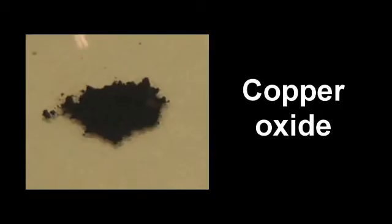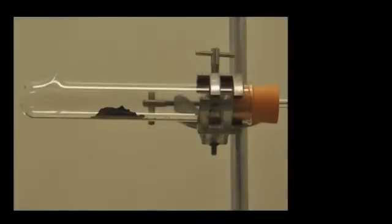Copper oxide is a black powdery solid. We place a small amount of copper oxide in a boiling tube which has a hole in the bottom. Methane is passed through a tube which passes through a bung.